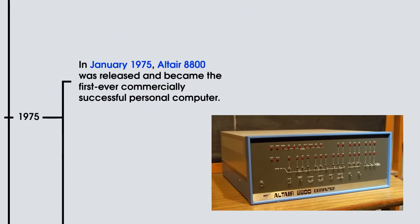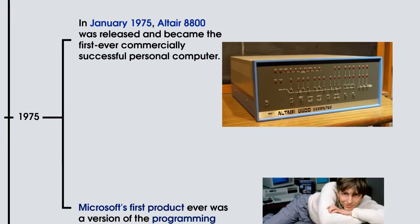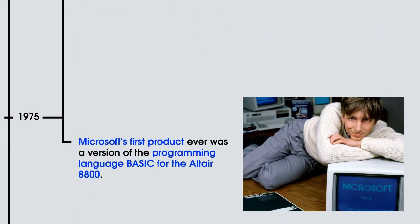In January 1975, the Altair 8800 was released and became the first ever commercially successful personal computer. In that same year, Microsoft's first product ever was a version of the programming language BASIC for the Altair 8800.